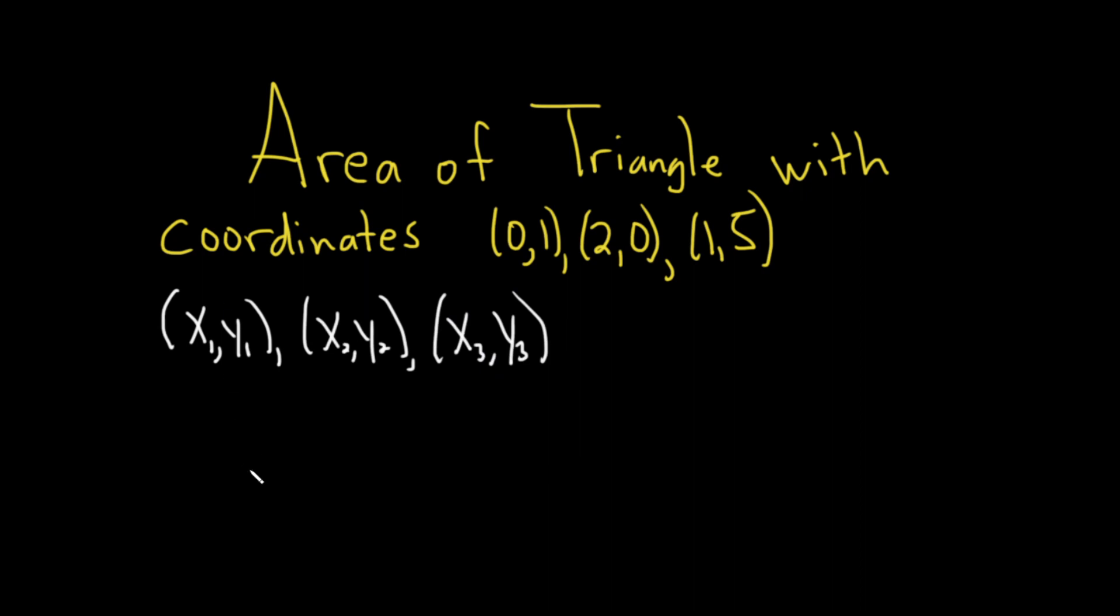The area of that triangle is given by the following: D equals one half times the determinant of a matrix with x1,y1 in the first row, x2,y2 in the second row, and x3,y3 in the third row. So you just simply write down the points, and then in the third column you just put 1s.